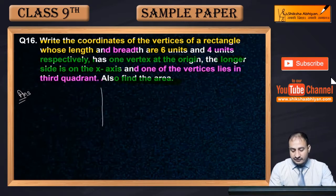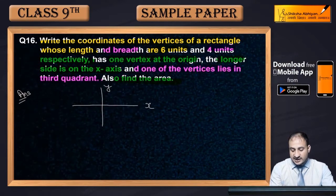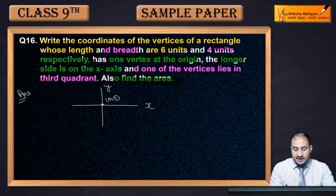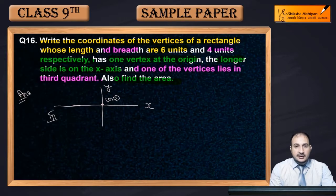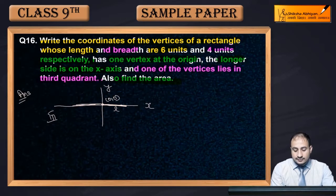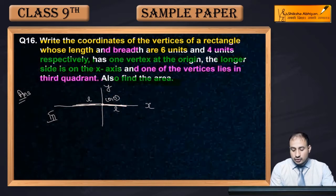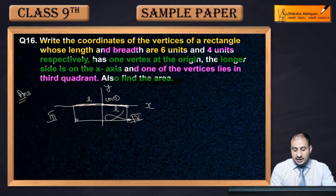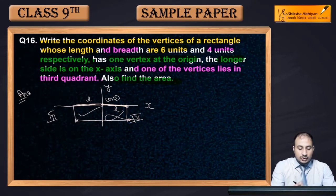Given the conditions, let me explain with a rough diagram. One vertex coordinate is the origin (0,0), and one point is in the third quadrant. The longer side (length) is on the x-axis. If we extend the length to the left, the point will fall in the third quadrant and the rectangle will form correctly. Extending to the right would place the third coordinate in the fourth quadrant, which is not possible.